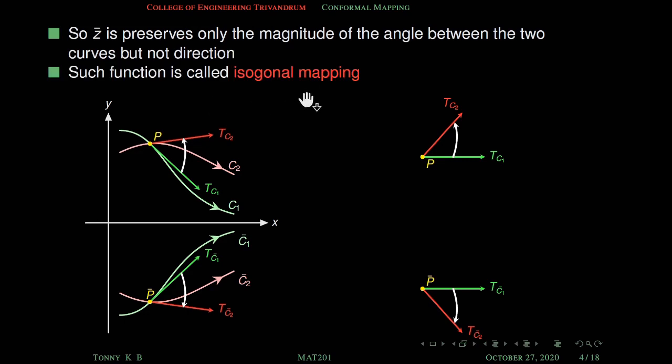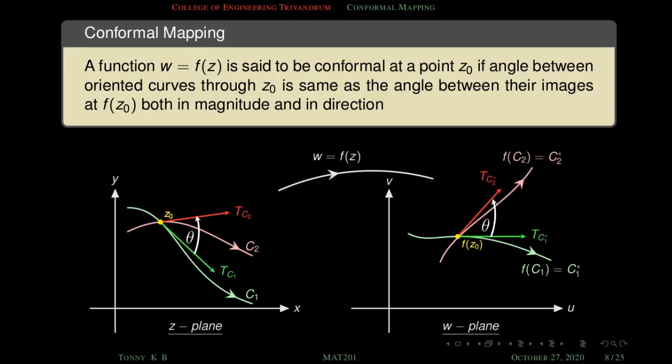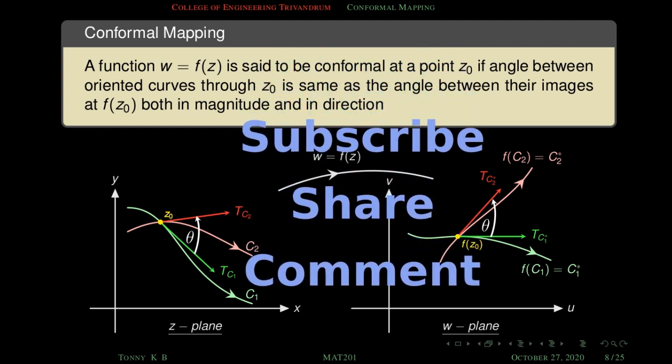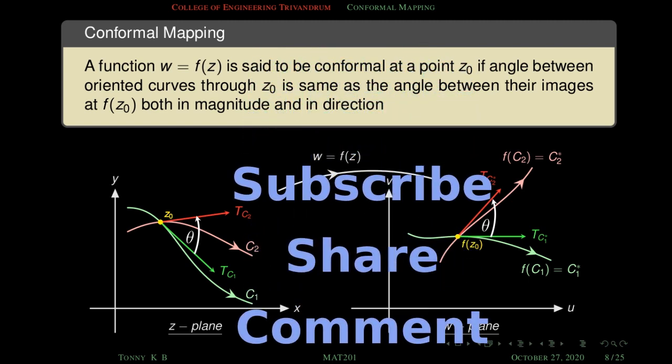Such a function is called an isogonal mapping — it preserves the magnitude of angles but not sense. You may wonder whether there exists at least one conformal map — we can easily find infinitely many conformal maps with the help of analytic functions. We will see that result and some problems in the next session. If this video is useful, please comment, share, and subscribe. Thank you.